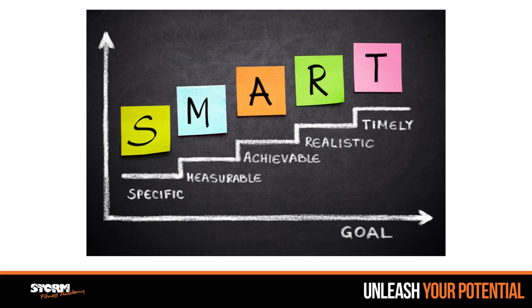We obviously want the goal to be achievable. If it's not achievable, it's going to be demoralizing rather than motivating. We also want it to be realistic, and this is quite personal — it might be realistic for one person but not necessarily for somebody else. So realistic for that person's age, gender, abilities, and time frame — how much time do they have and how much can they commit to this particular goal?